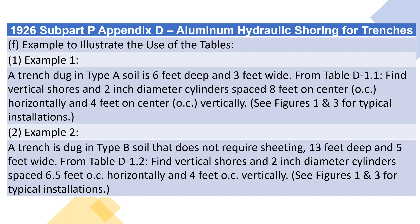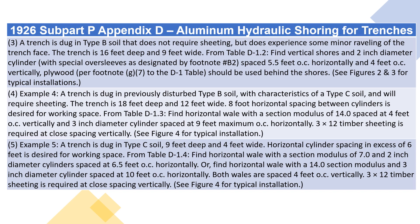Example 2: A trench is dug in type B soil that does not require sheeting but does experience some minor rattling of the trench face. The trench is 16 feet deep and 9 feet wide. From Table D1.2, find vertical shores and 2-inch diameter cylinders with special oversleeves as designated by footnote #B2, spaced 5.5 feet O.C. horizontally and 4 feet O.C. vertically. Plywood, per footnote G7 to the D1 table, should be used behind the shores. See figures 2 and 3 for typical installations.